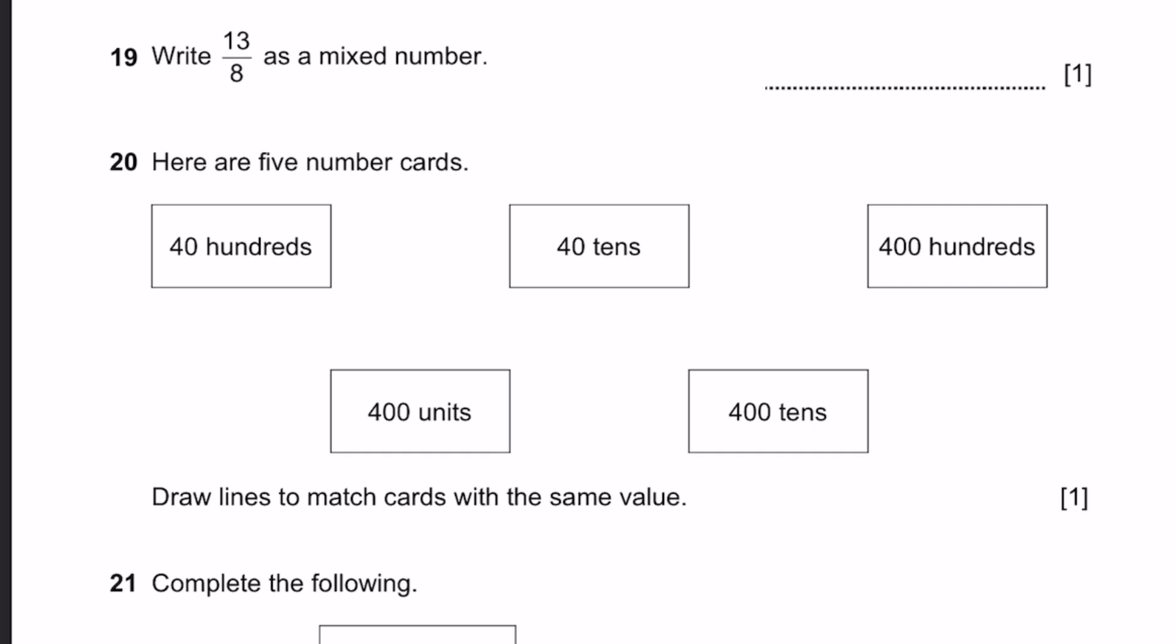Question 19. Write 13 by 8 as a mixed number. So 13 by 8, when we simplify, it becomes 1, 5 by 8. That's the answer.